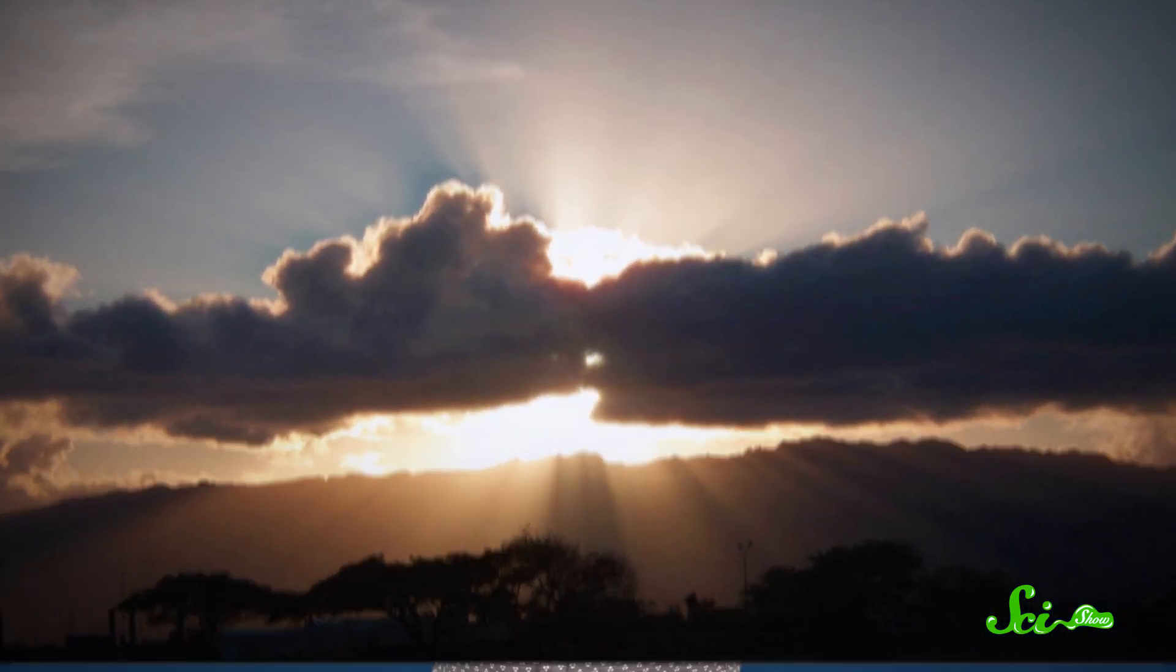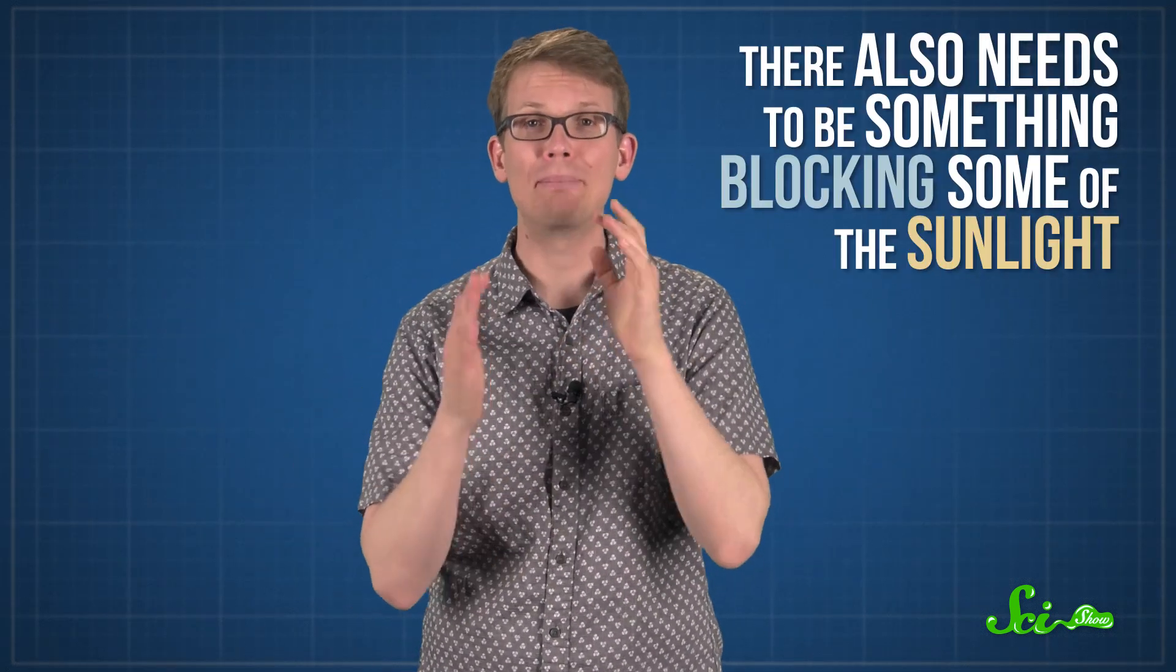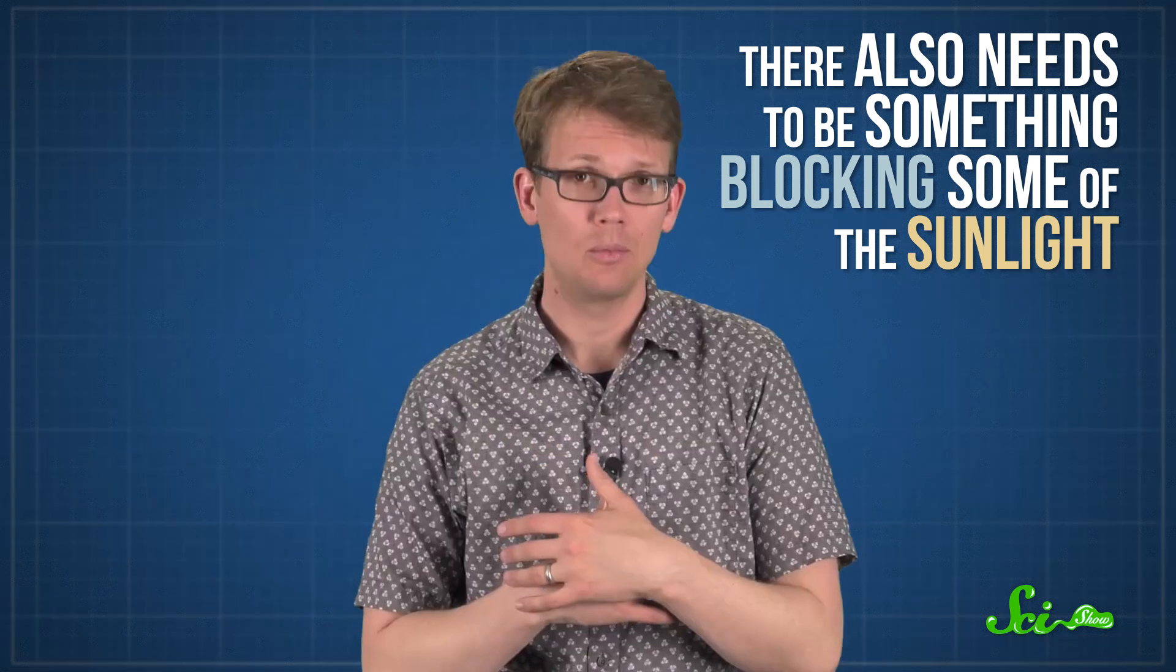But crepuscular rays aren't always visible whenever there's a lot of dust or moisture in the air. There also needs to be something blocking some of the sunlight. Without anything in the way, we wouldn't be able to see the paths of the individual rays, no matter how much stuff was in the air.